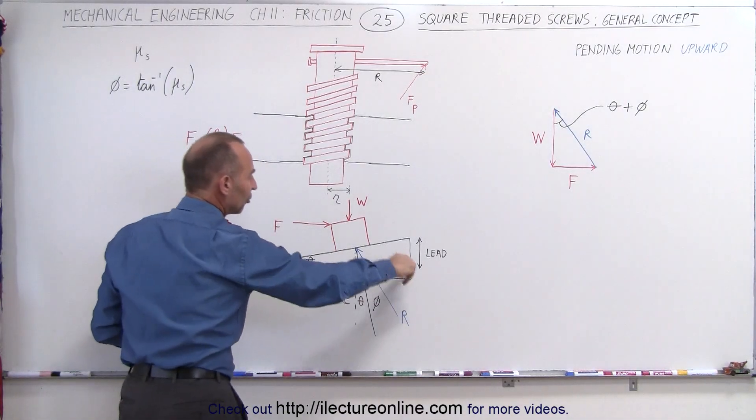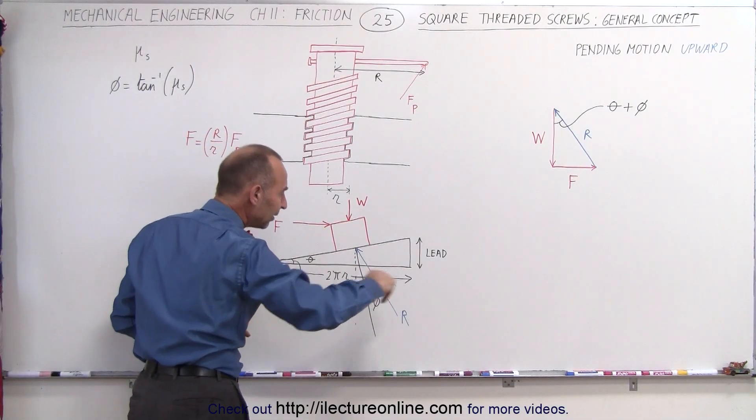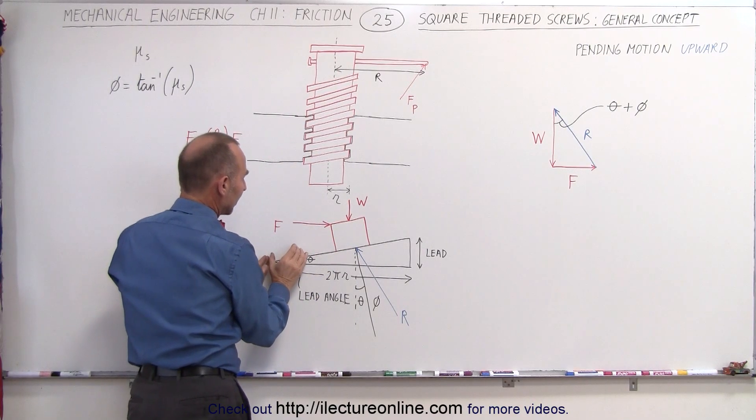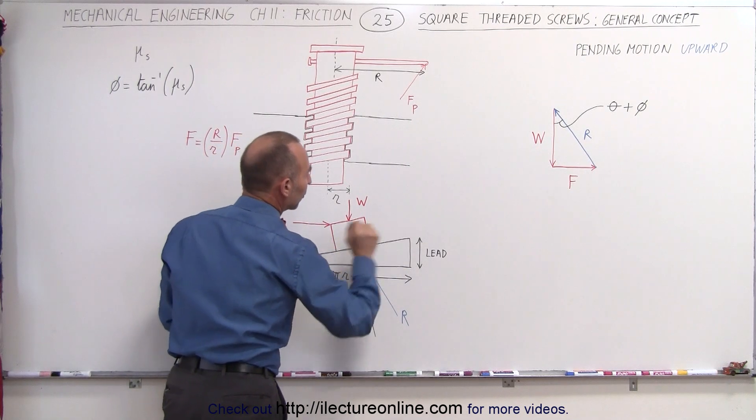So this is imagined to be the entire distance of one time around the screw, so to speak. And so then you can see that the thread will work its way up or the screw will work its way up the thread.